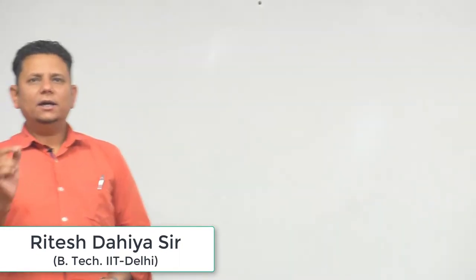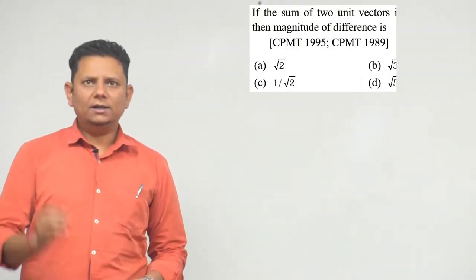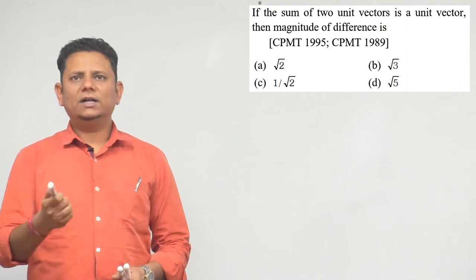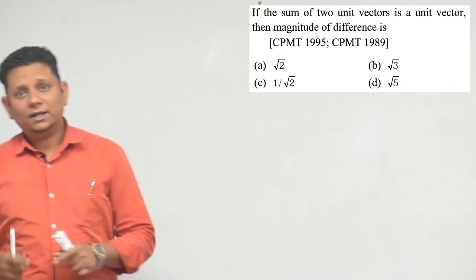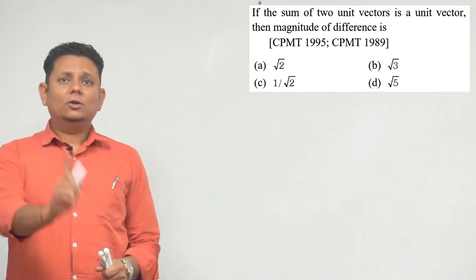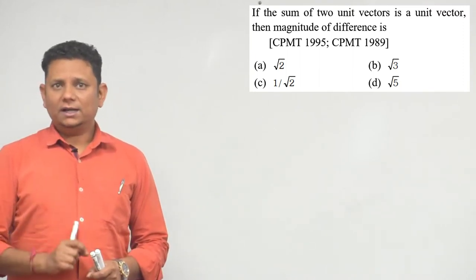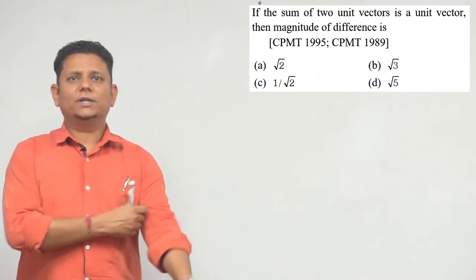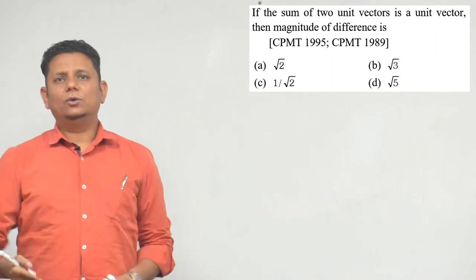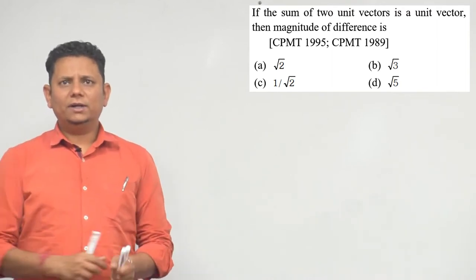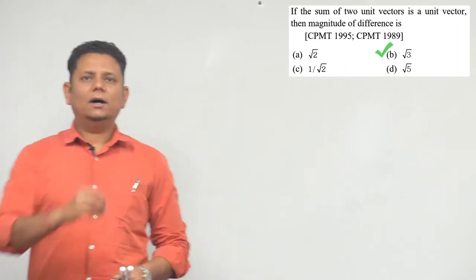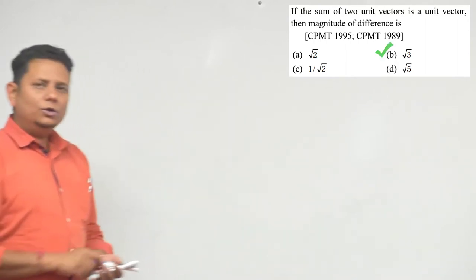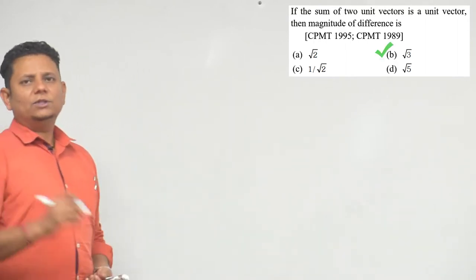Next question: if the sum of two unit vectors is a unit vector, then the magnitude of their difference will be what? हमें बताना है कि अगर दो यूनिट वेक्टर हैं और उनको एड करने के बाद भी यूनिट वेक्टर आता है, तो दोनों का डिफरेंस क्या आएगा? Options are: root 2, 1 by root 2, root 3, या फिर under root 5.